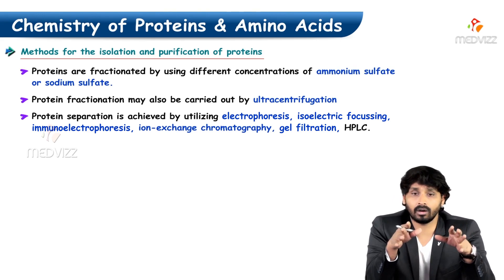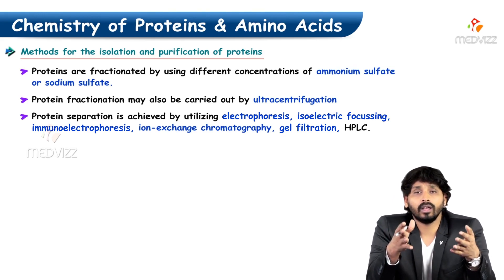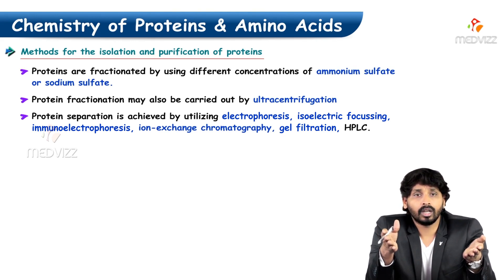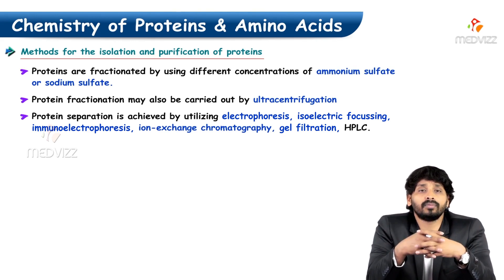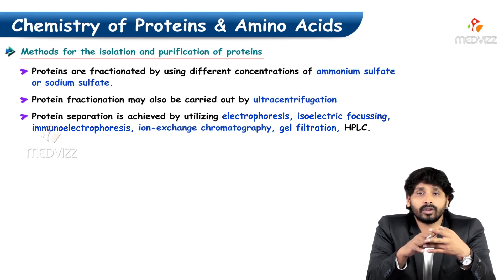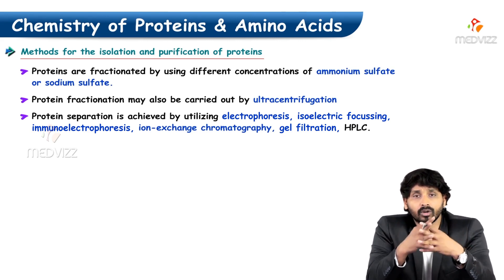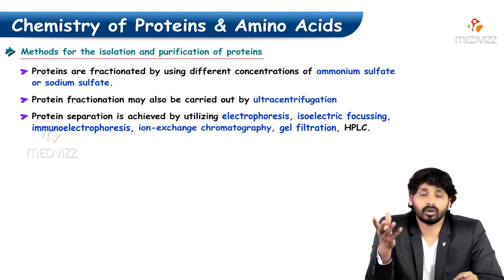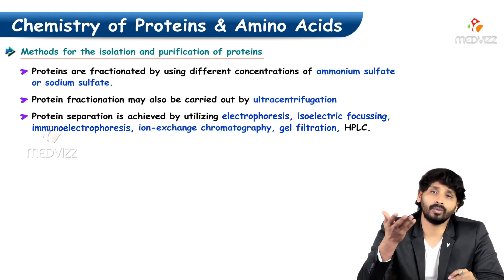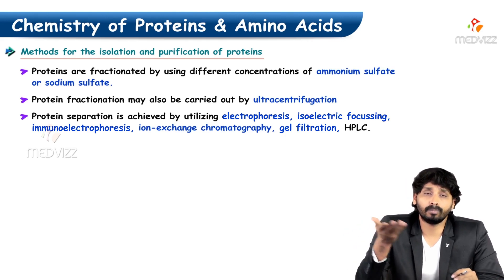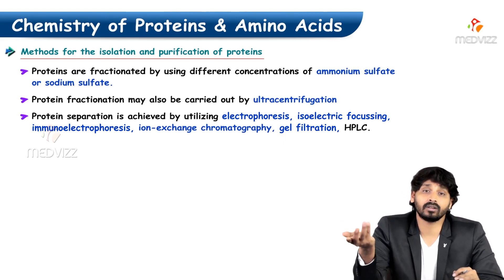For example, immunoglobulins can be separated using immuno-electrophoresis, and albumin can be separated using electrophoresis. In ion exchange chromatography, different proteins have different molecular weights — one protein weighs a certain amount and another weighs differently — so based on molecular weight, proteins can also be separated.